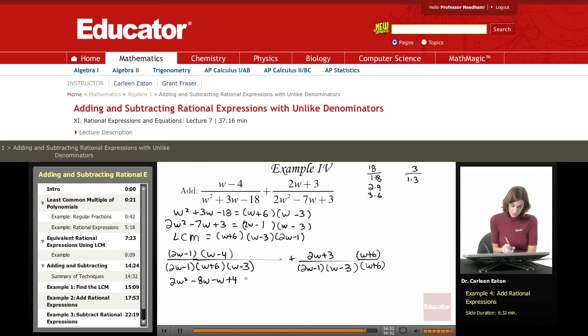Over here, 2W times W is going to give me 2W squared. Outer term is going to be 12W. Inner term, 3W. Last term, 18.